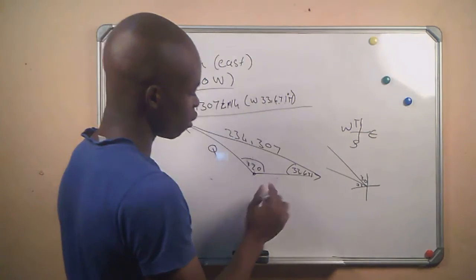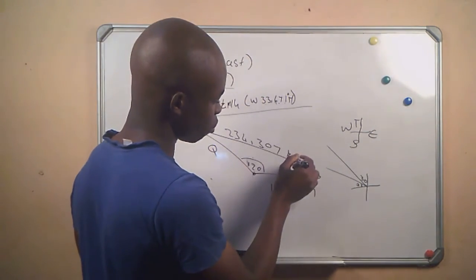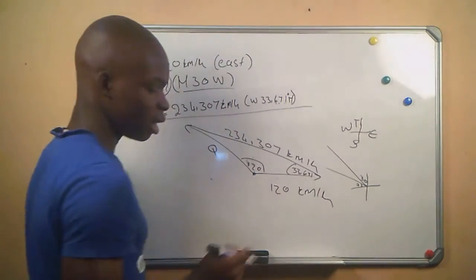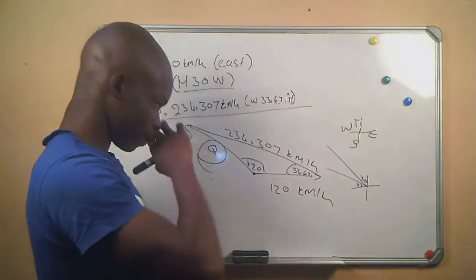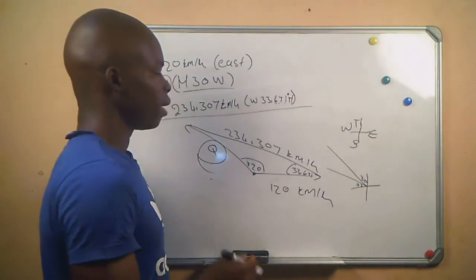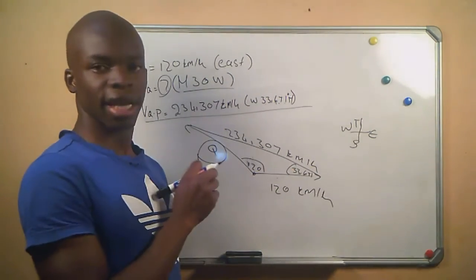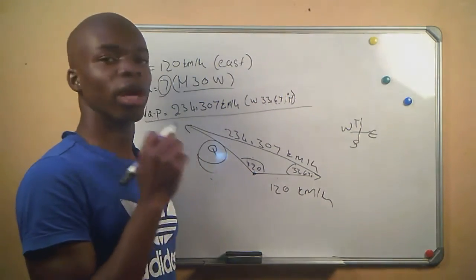234.307 kilometers per hour. We are given 120 kilometers per hour for the velocity of P. And then they say we must calculate for this velocity. So it is clear from this point that this structure is not a right angle triangle.